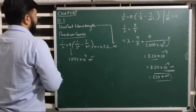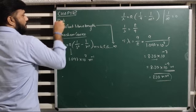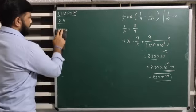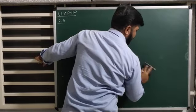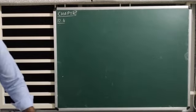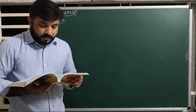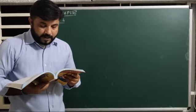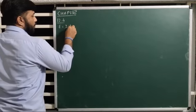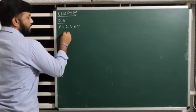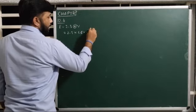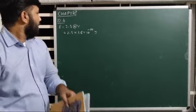Now let us see exercise example number 12.4. What is there in 12.4? Analysis is important. Let us see. The difference of energy is given — 2.3, that means energy is given: E is equal to 2.3 electron volt. We want to convert this energy into joule, so you have to put the value of e that is 1.6 multiplied by 10 raise to minus 19 joule.